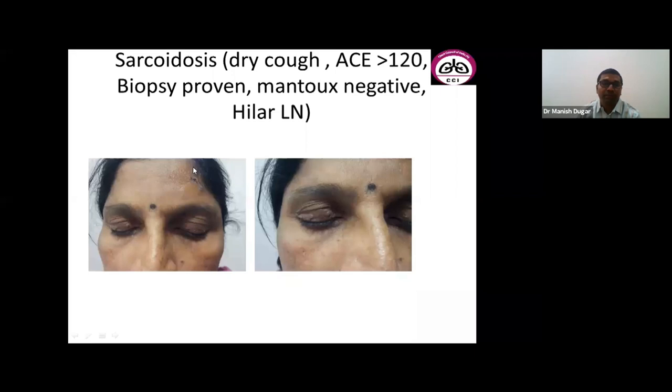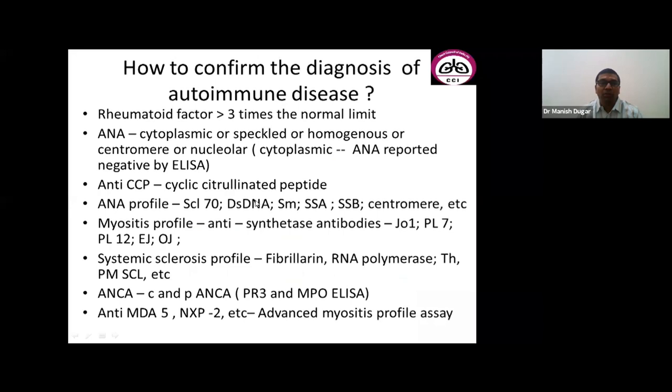Do not forget sarcoidosis — patients may present with nodules around the eyes. One patient presented with dry cough; further evaluation showed biopsy-proven sarcoid with granuloma on the forehead lesion and hilar lymphadenopathy. So once we have thought about CTD-ILD, how do we investigate these patients?